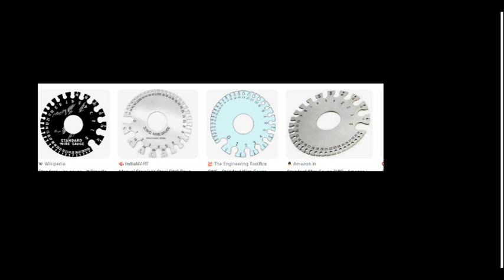This is the wire gauge. We usually use SWG — Standard Wire Gauge — or American Wire Gauge. Sometimes they can give you some wires and ask you to find the gauge of the wire, and then they will provide you this device also — this wire gauge.